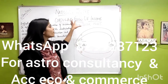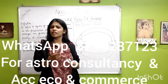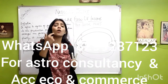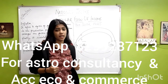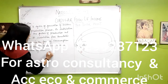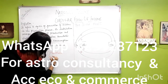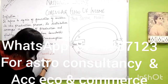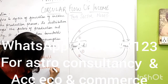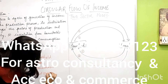When we talk about the circular flow of income, we talk about four sectors and how money and services are transferred among them. The four sectors are: first, household; second, firm; third, government; and fourth, rest of the world.